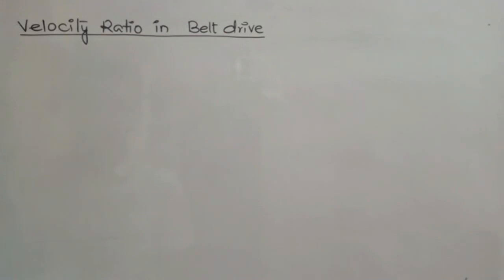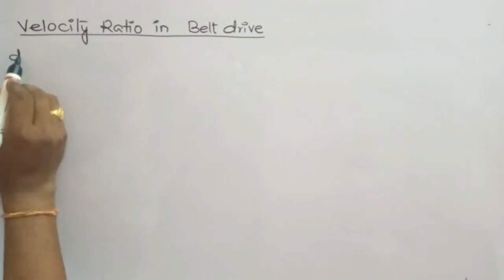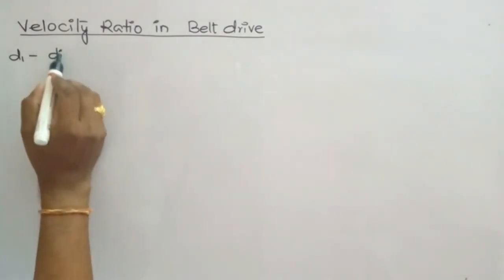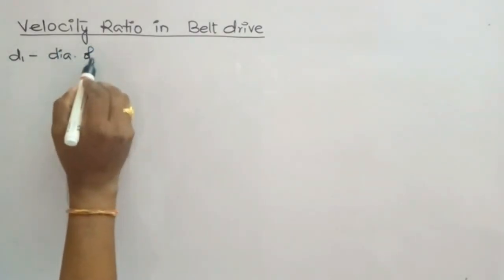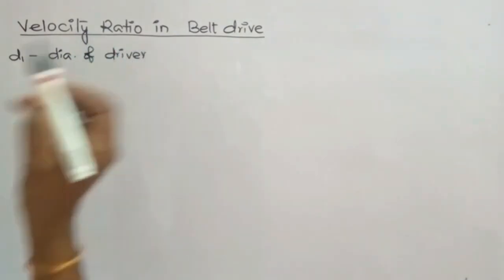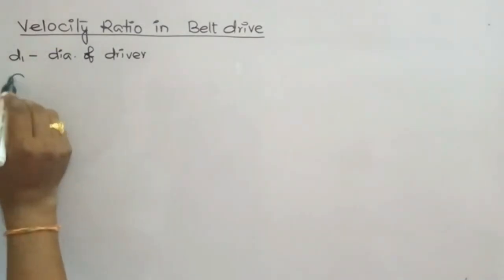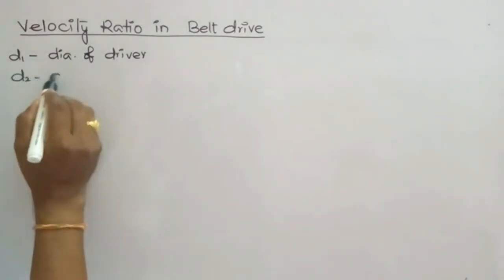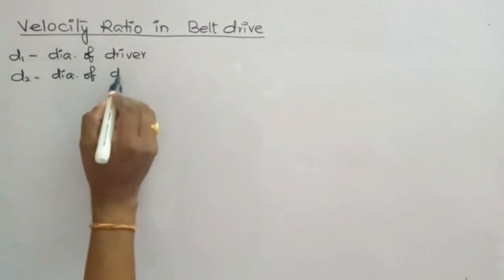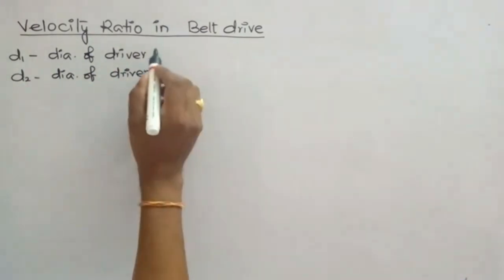Let us take d1 as the diameter of the driver pulley, and d2 as the diameter of the driven pulley, also known as the follower pulley.